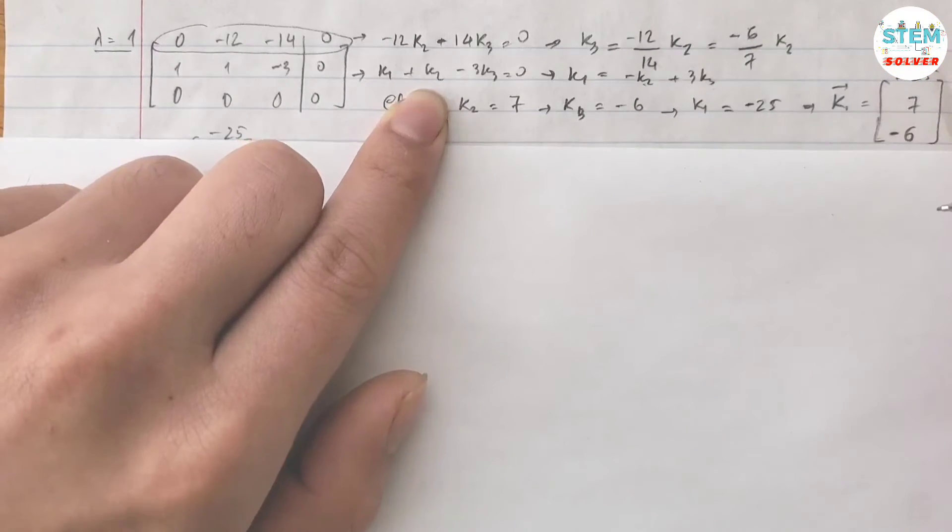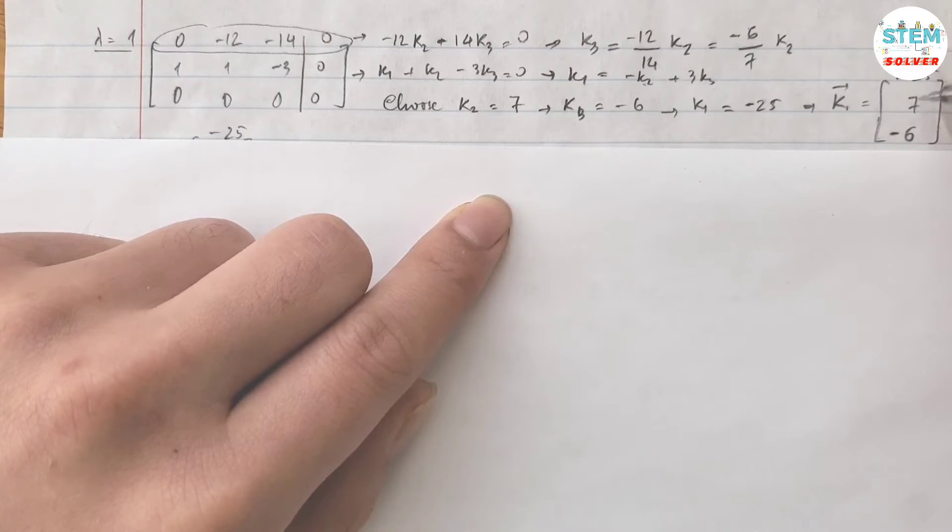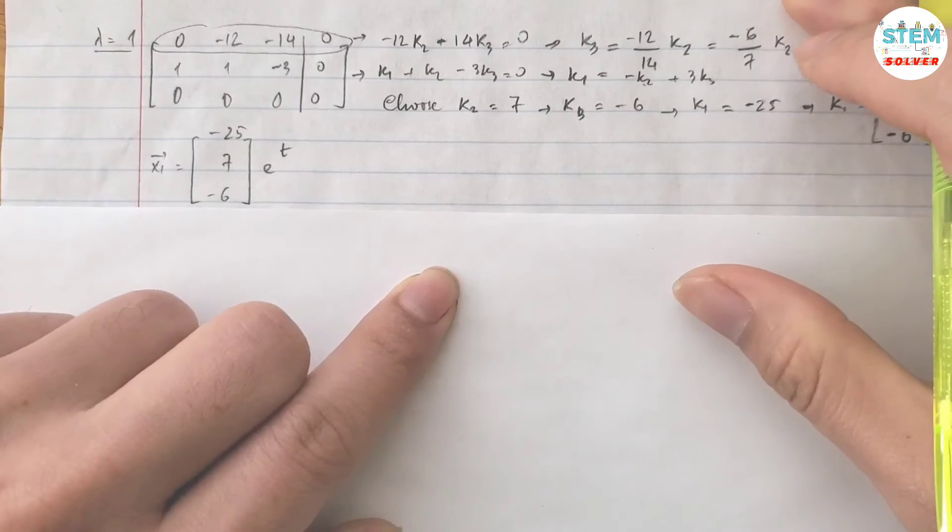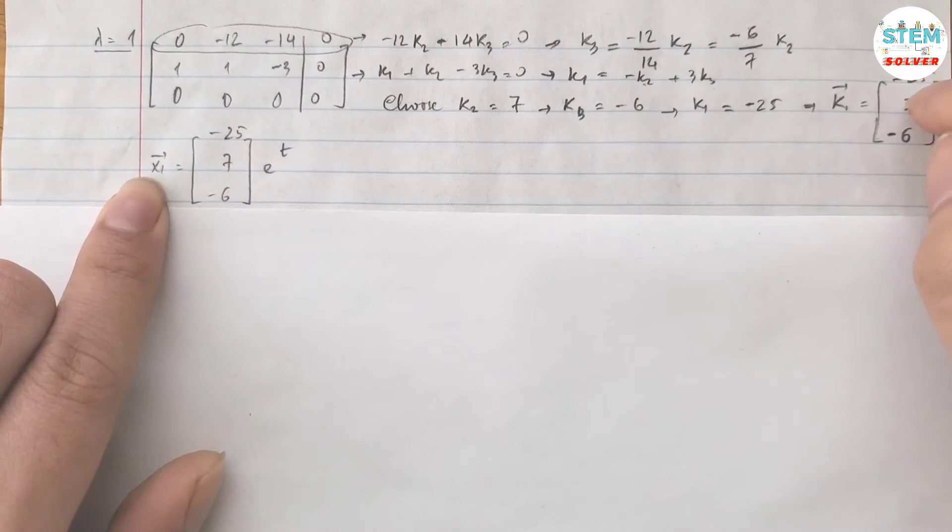Which is negative twenty-five. Then my vector k is negative twenty-five, seven, negative six. Then my vector x1 is vector k times e to the t.